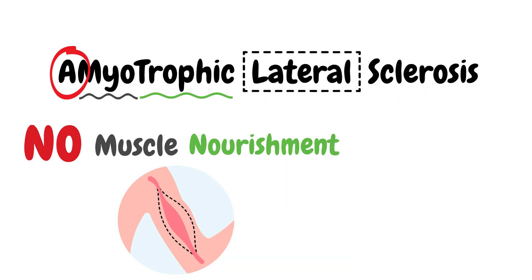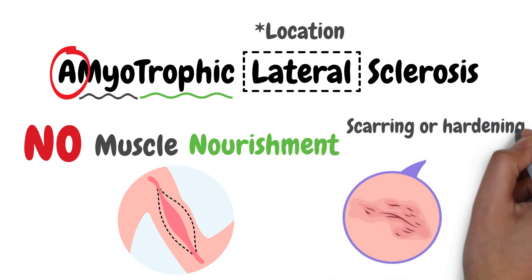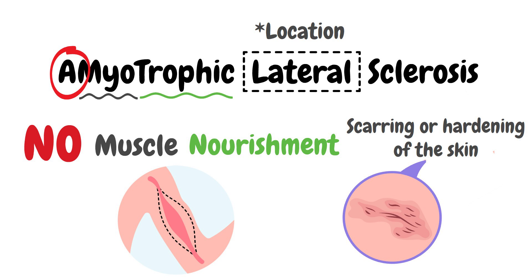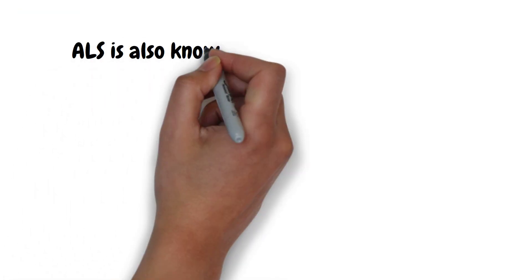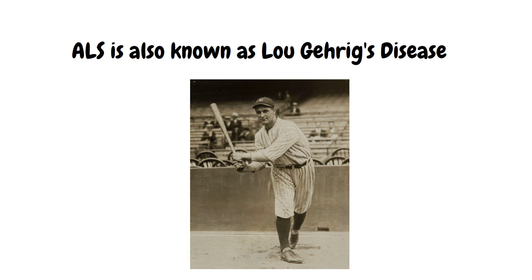Lateral refers to the areas in a person's spinal cord where portions of the neurons that signal and control the muscles are located. As this area degenerates, it leads to scarring or hardening in that region, which we call sclerosis. ALS is also known as Lou Gehrig's disease because ALS ended the career of Lou Gehrig, one of baseball's most beloved players who played with the New York Yankees for 17 years.